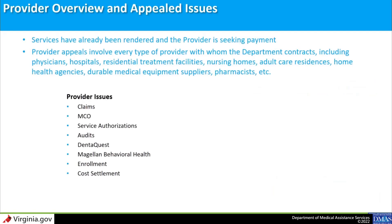The Appeals Division handles two levels of provider appeals: informal and formal. Providers can file an informal provider appeal of any adverse action taken by DMAS that includes appeal rights. Some things providers typically appeal are when medical services have been rendered and the provider is seeking payment, enrollment in the Medicaid program, recoupment of previously paid amounts, audits disallowing incentive payments, and notifications setting prospective payment rates.